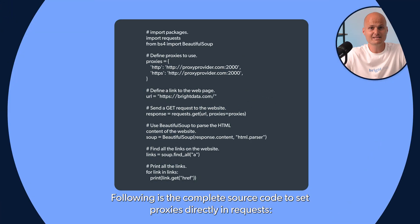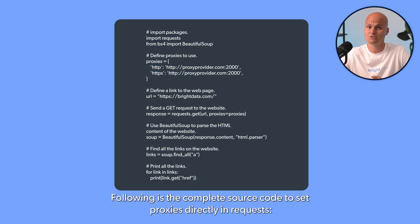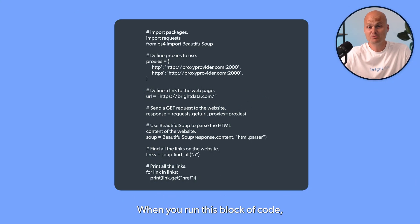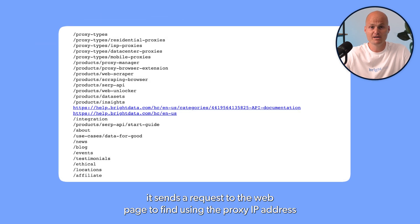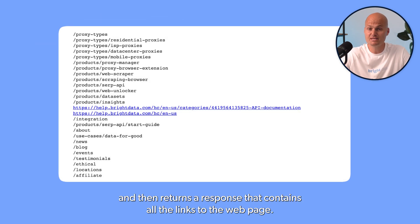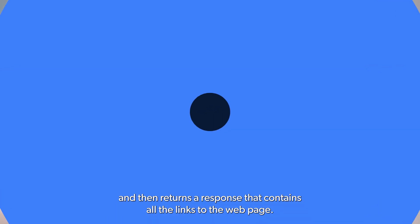Following is the complete source code to set proxies directly in requests. When you run this block of code, it sends a request to the webpage defined using the proxy IP address and then returns the response that contains all the links to the webpage.